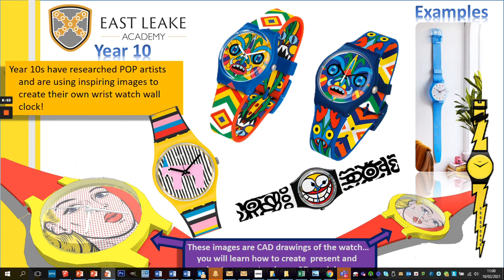At the moment the Year 10s are working on a project where they've researched pop artists and are using those images to help create their own wrist watch wall clock. Parents that are old enough might remember the Swatch wall clock — we're actually doing a big wall clock-sized product in the style of the Swatch watches. We're researching not only artists but also iconic products; this was an iconic product in the late 80s and early 90s.